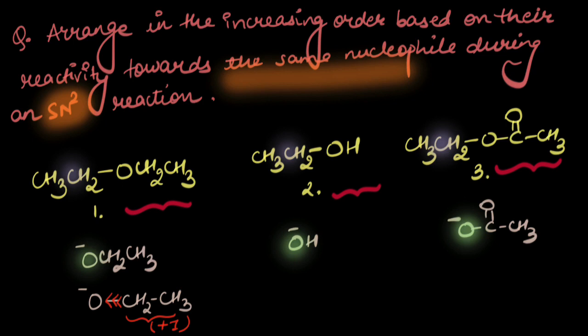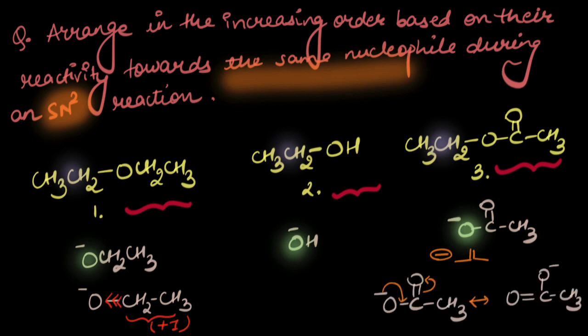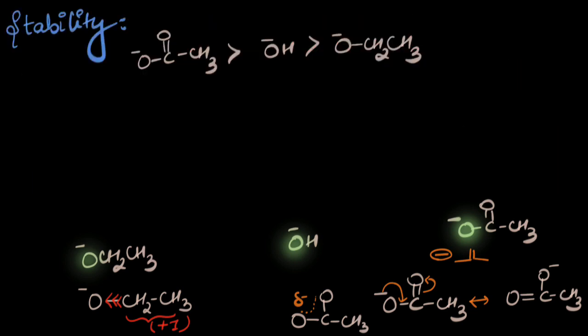What is happening in the third case is different. Looking carefully, the negative charge is alternate to the pi bond, so there is a possibility of resonance. Due to this resonance, the negative charge spreads out more and is stabilized further.